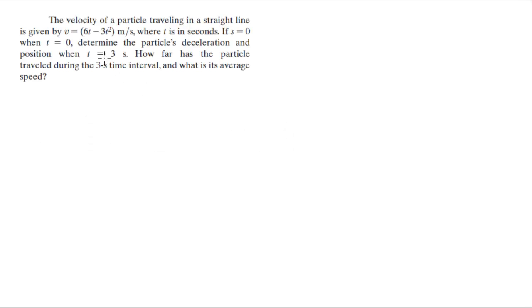Alright guys, let's do this problem that says the velocity of a particle traveling along a straight line is given by v equals 6t minus 3t squared meters per second, where t is in seconds.